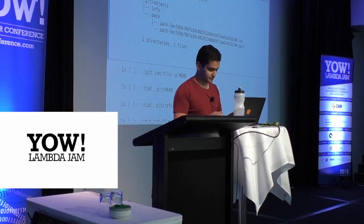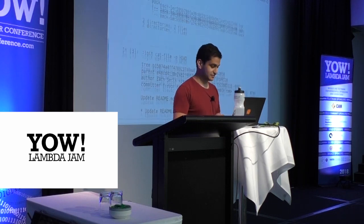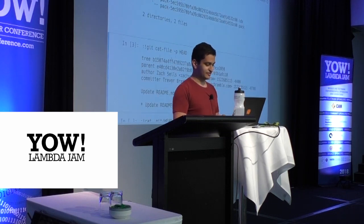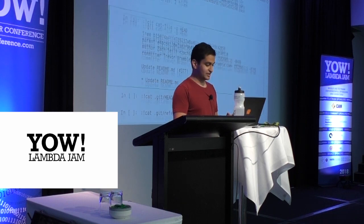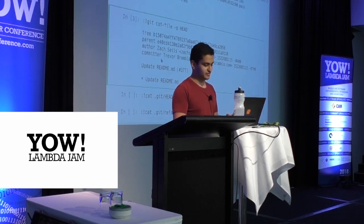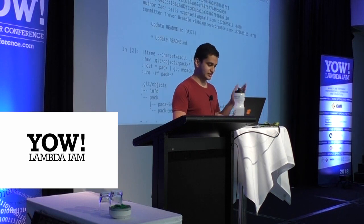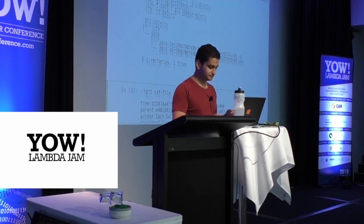Let's look again at the most recent commit. git cat-file is a plumbing command, and the -p flag is for pretty print. So I'm pretty-printing HEAD, which is the most recent commit. It has a tree, a parent, an author, a committer, and a message. It doesn't have a commit ID like before because that's not actually stored inside the commit.